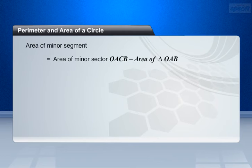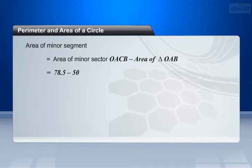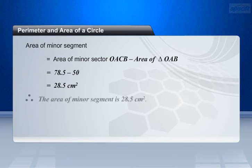Area of minor segment equals area of minor sector OACb minus area of triangle OAB. This is equal to 78.5 minus 50. This is equal to 28.5 cm square. Therefore, the area of the minor segment is 28.5 cm square.